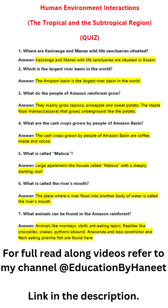Question three: What do the people of Amazon rainforests grow? They mainly grow tapioca, pineapple, and sweet potato. The staple food is manioc, or cassava, that grows underground like the potato.